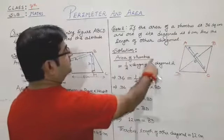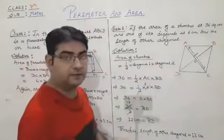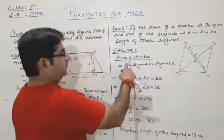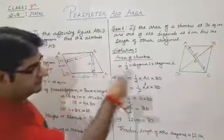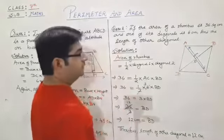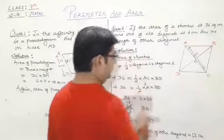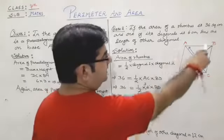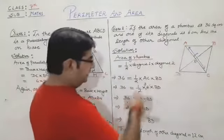Area of rhombus is equal to one-half times diagonal 1 times diagonal 2, that is half the product of the diagonals. In this figure ABCD, we have diagonal AC and BD. So 36 equals one-half into AC into BD.